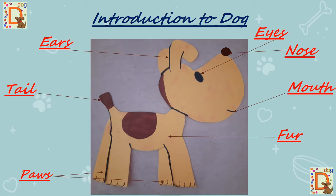Now, dogs make a special sound. Do you know what the sound of a dog is called? It is called a bark. Do you want to listen? Woof, woof! That's the bark of a dog. Can you also make that sound? Very good.